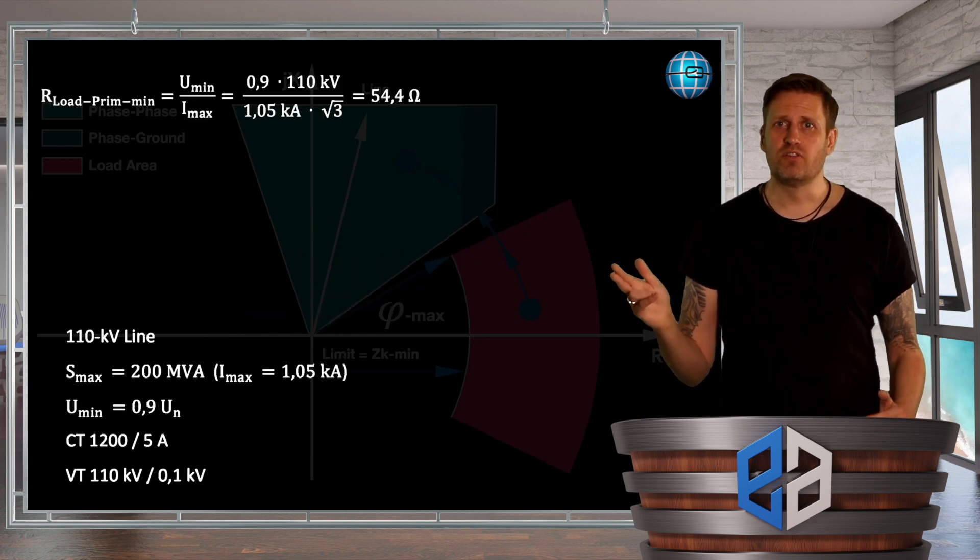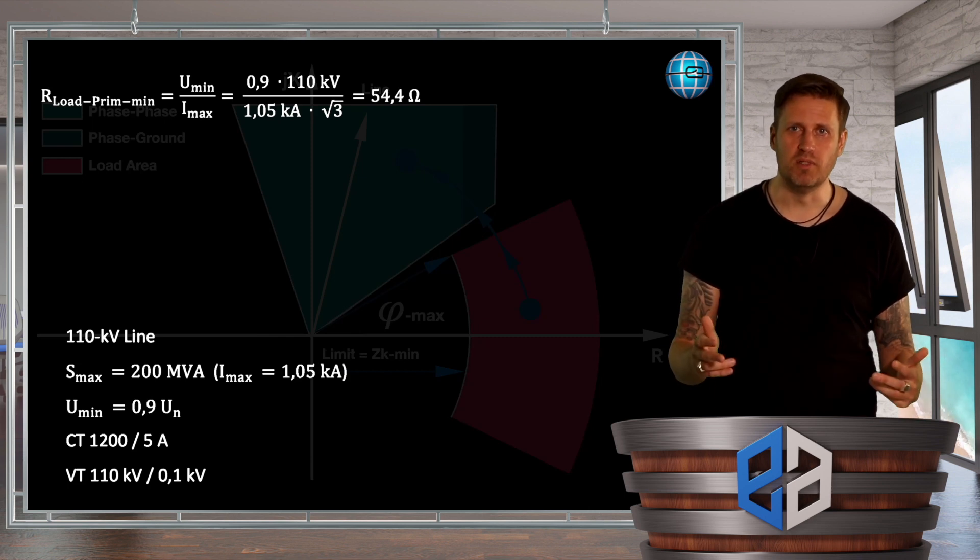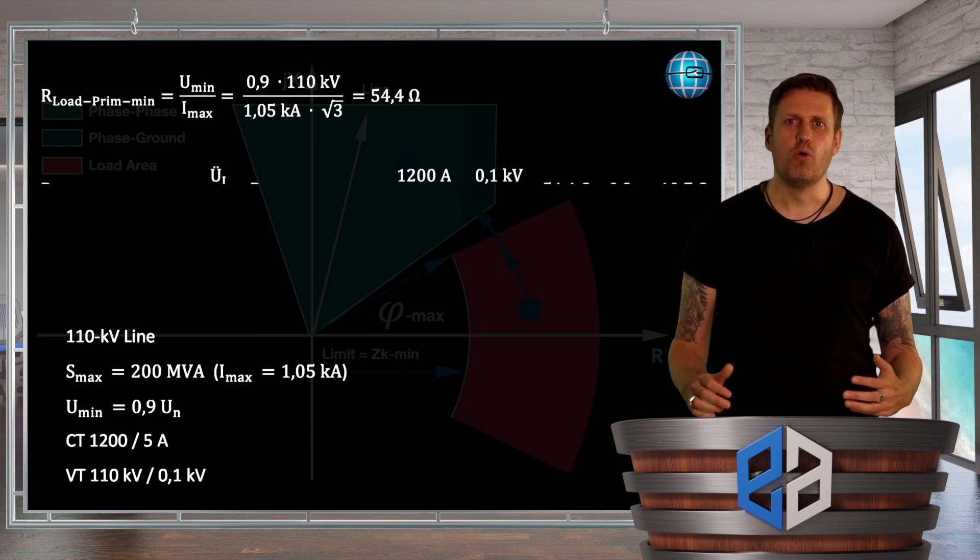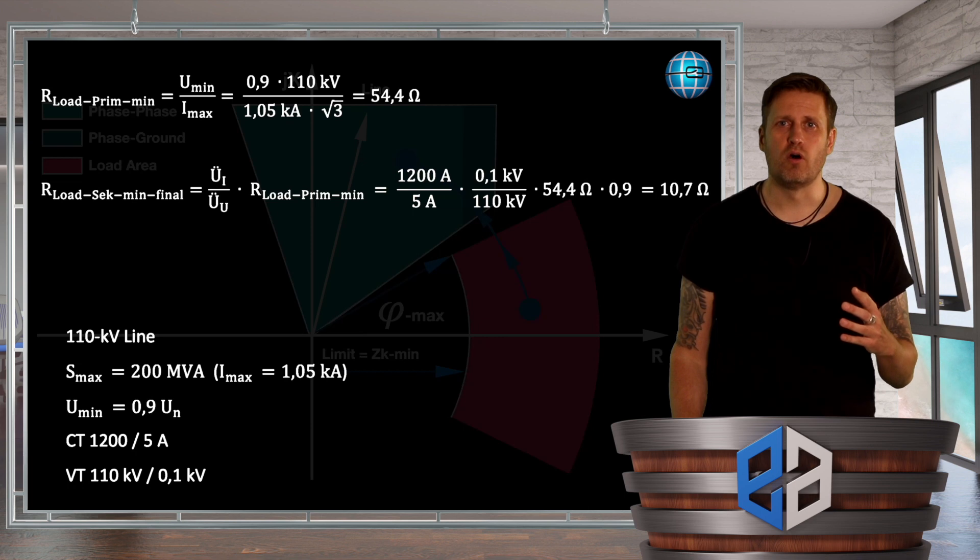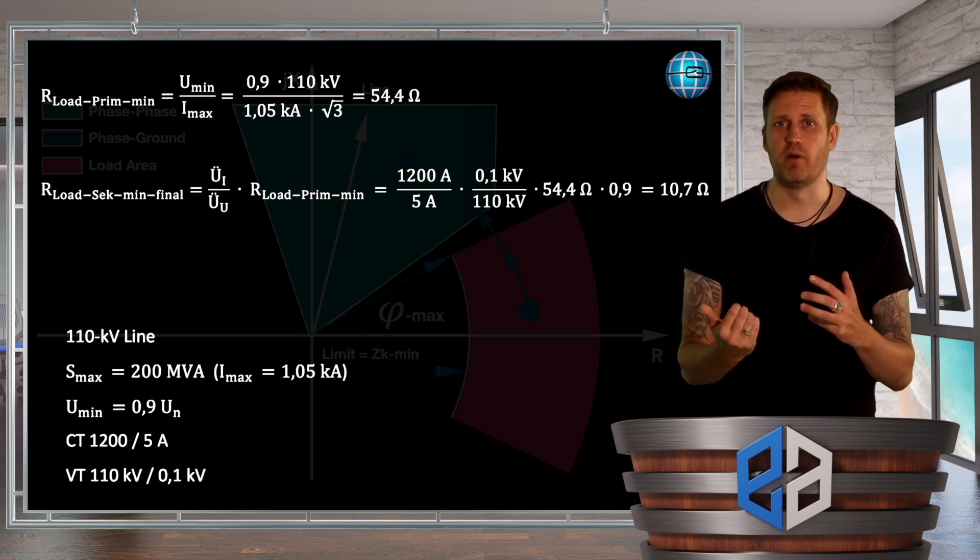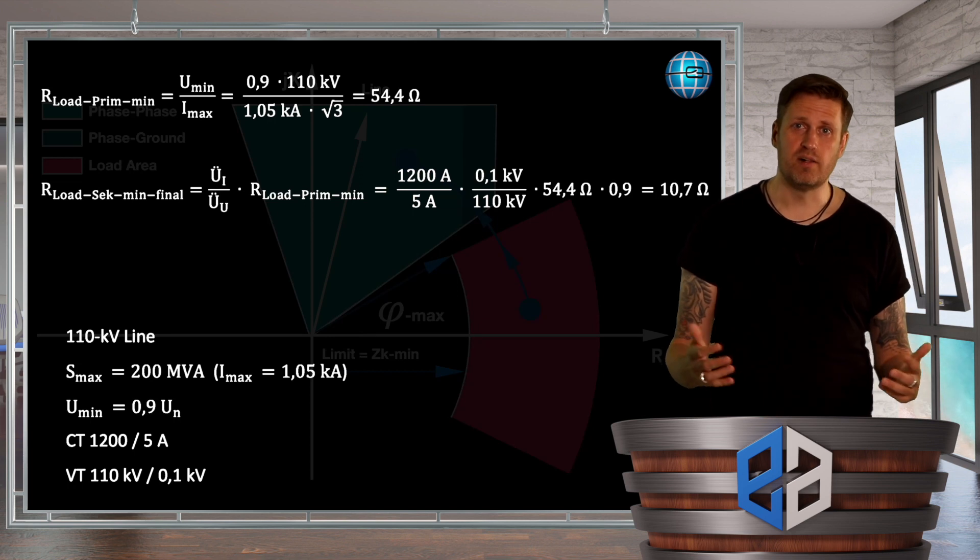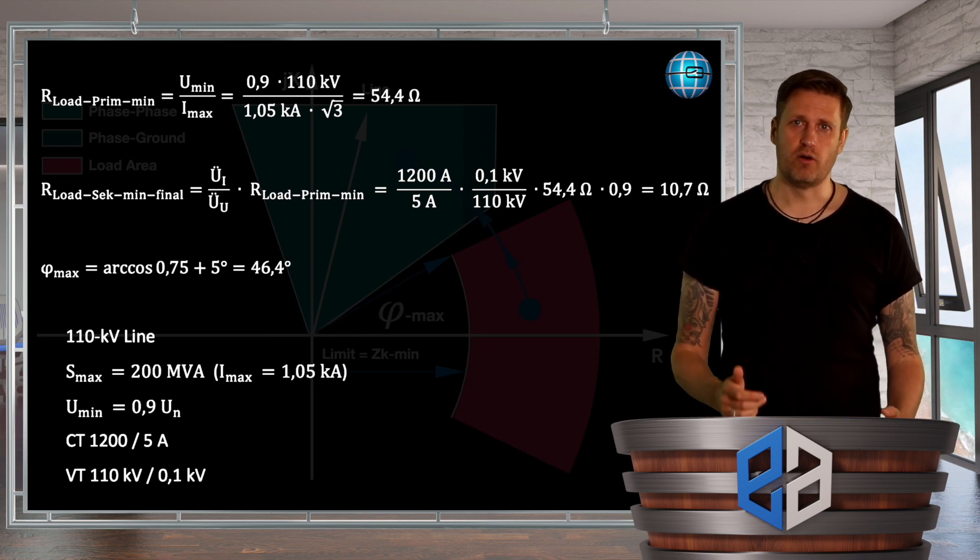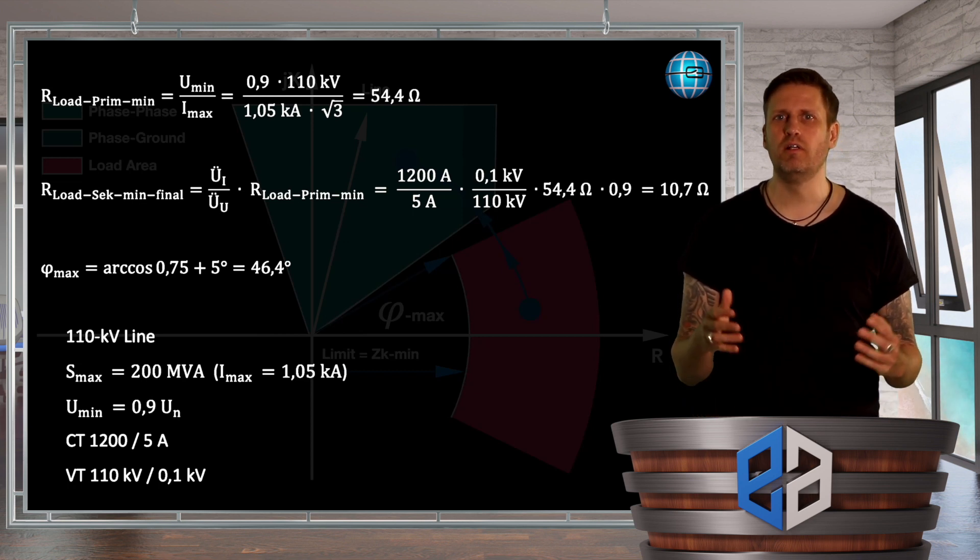Okay, let's get started. The amount of the smallest primary load impedance is calculated easy from the quotient of minimum operating voltage and the maximum operating current that can be transmitted. For our example, we get a value of 54.4 Ohm. Now we convert the primary impedance to the secondary side by multiplying the quotient of the current transformer ratio and the voltage transformer ratio by the primary impedance and a safety factor of 0.9. As a result, we get a final setting volume of 10.7 Ohm.